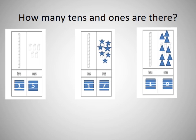Children, now it is time to ask you some questions. How many tens and ones are there? In the first picture you can see how many tens? One. Yes. In the second picture, how many ones? One, two, three, four, five. So, it is fifteen — one ten and five ones.